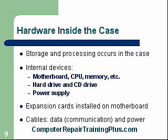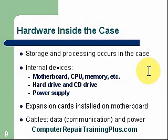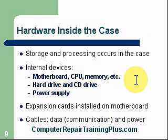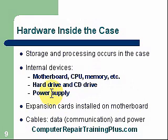Hardware inside the case — storage and processing occurs in the case. Internal devices include a motherboard, CPU, memory, maybe a video card, maybe a modem, a hard drive, and a CD or DVD drive. There's also a power supply that supplies all these devices. We're going to be talking about the power supply in another lesson, and also the hard drive, motherboard, CPU, and memory in another lesson.